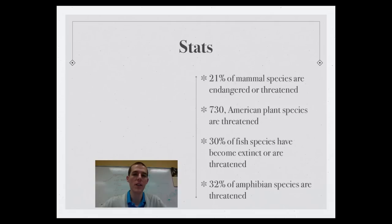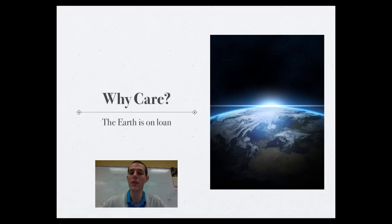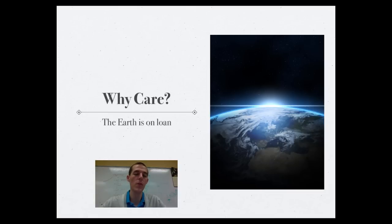Why should we care? There's a proverb that talks about us having the earth on loan from our children, not as a gift from our ancestors. The earth is a closed system — nothing new comes in, nothing goes out. Whatever we do to it will probably have consequences not so much for us, but for our kids in the future. We need to start looking at the long view: how can we preserve the earth for future generations?